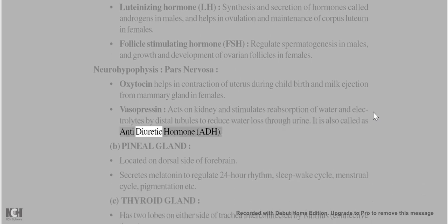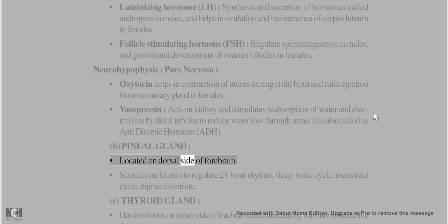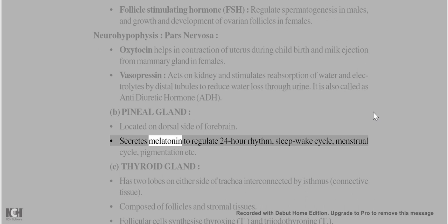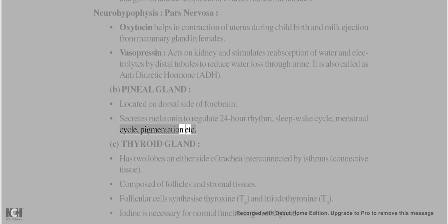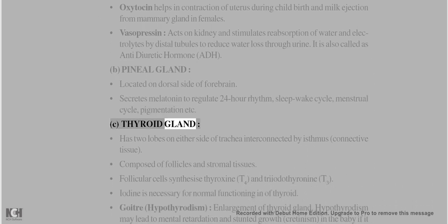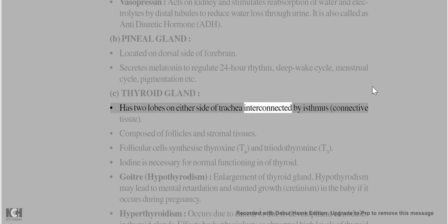Pineal gland is located on the dorsal side of the forebrain. It secretes melatonin, which regulates the 24-hour rhythm, sleep-wake cycle, menstrual cycle, pigmentation, etc. Thyroid gland has two lobes on either side of the trachea, interconnected by an isthmus.